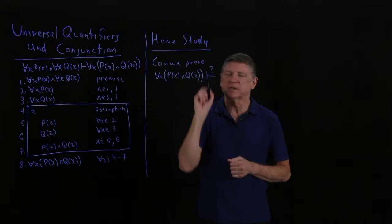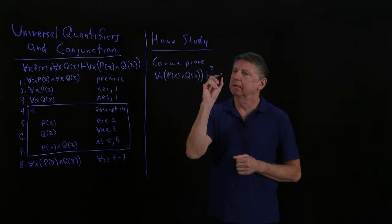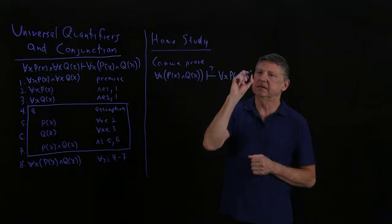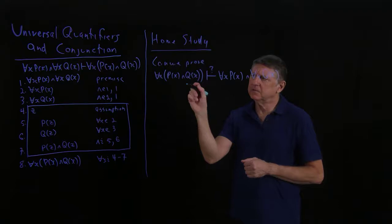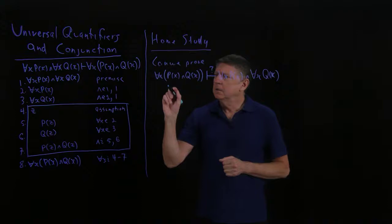Can we prove that if everything has the property P and has the property Q? Let's put a question mark to say we are not sure whether we can prove this or not.